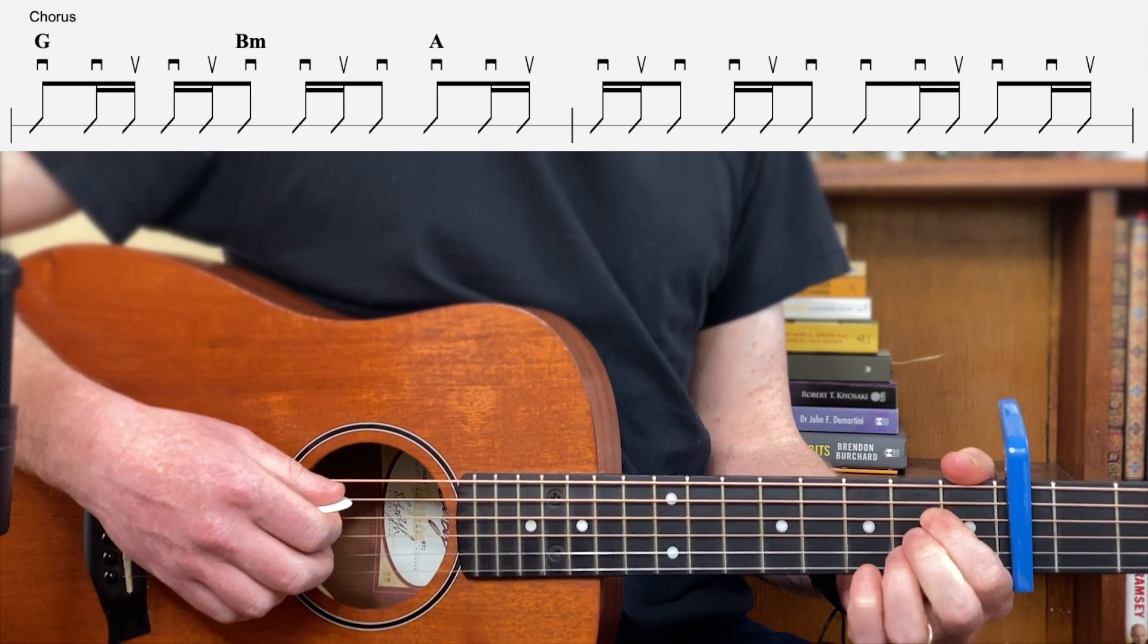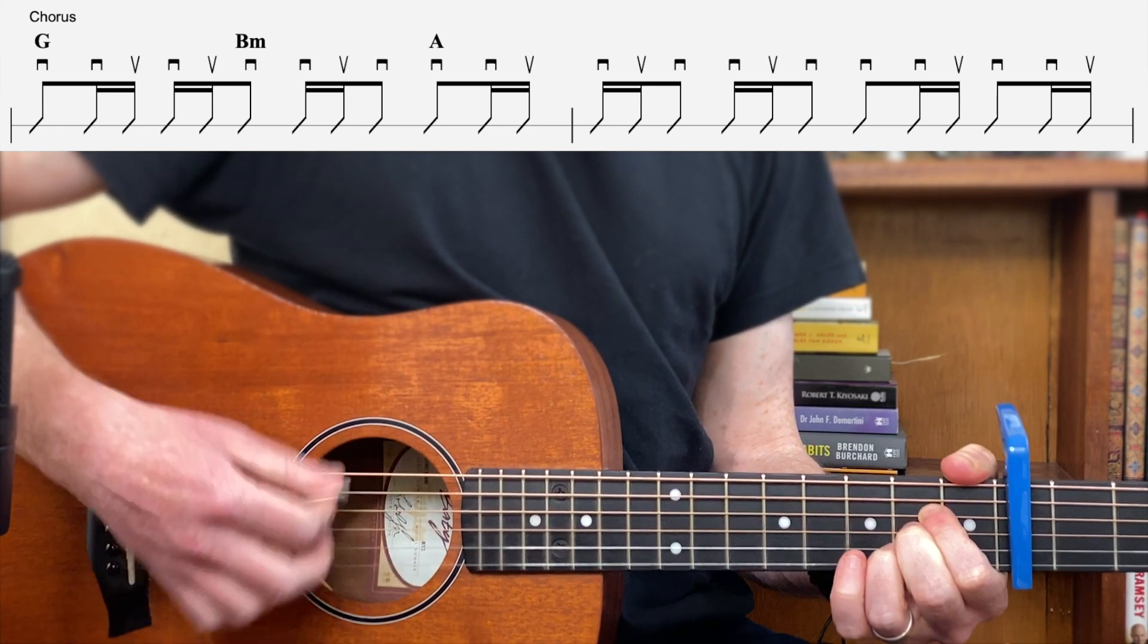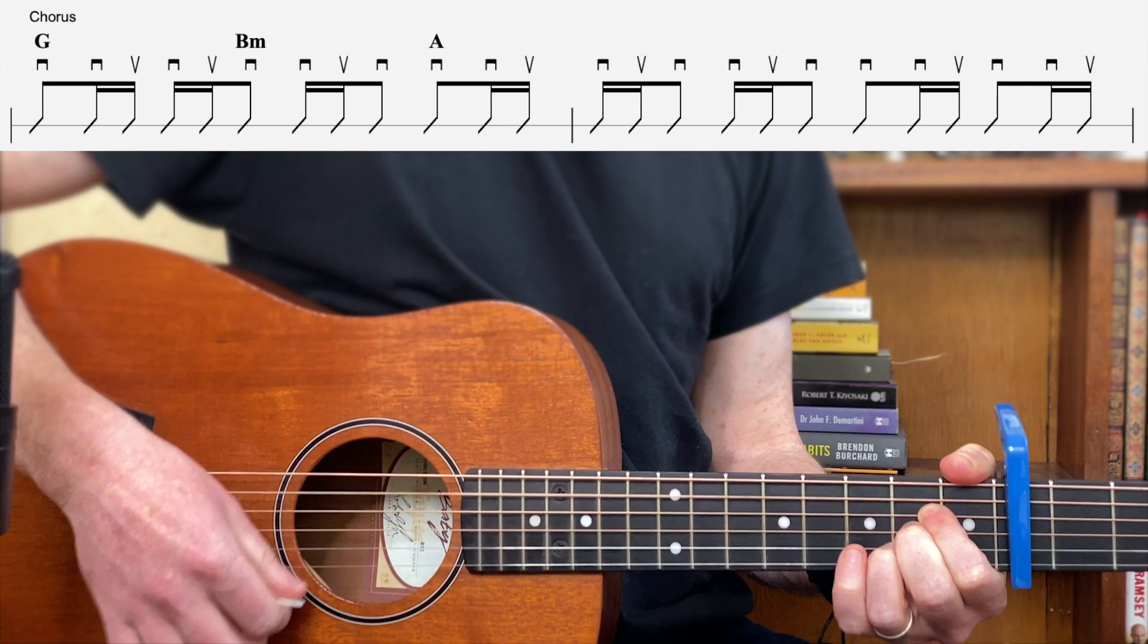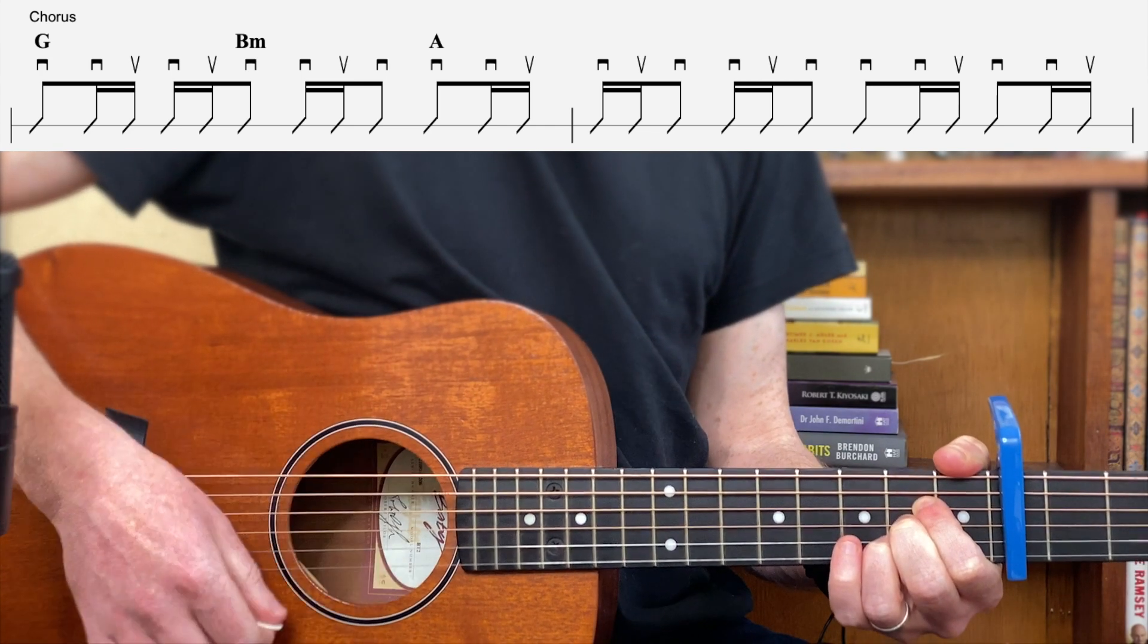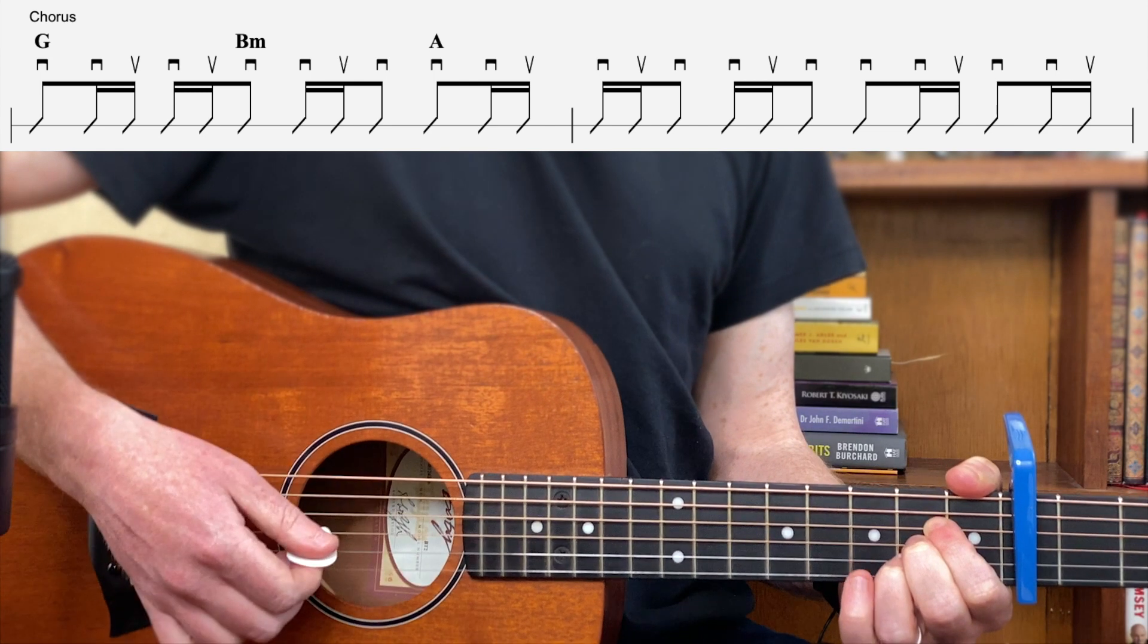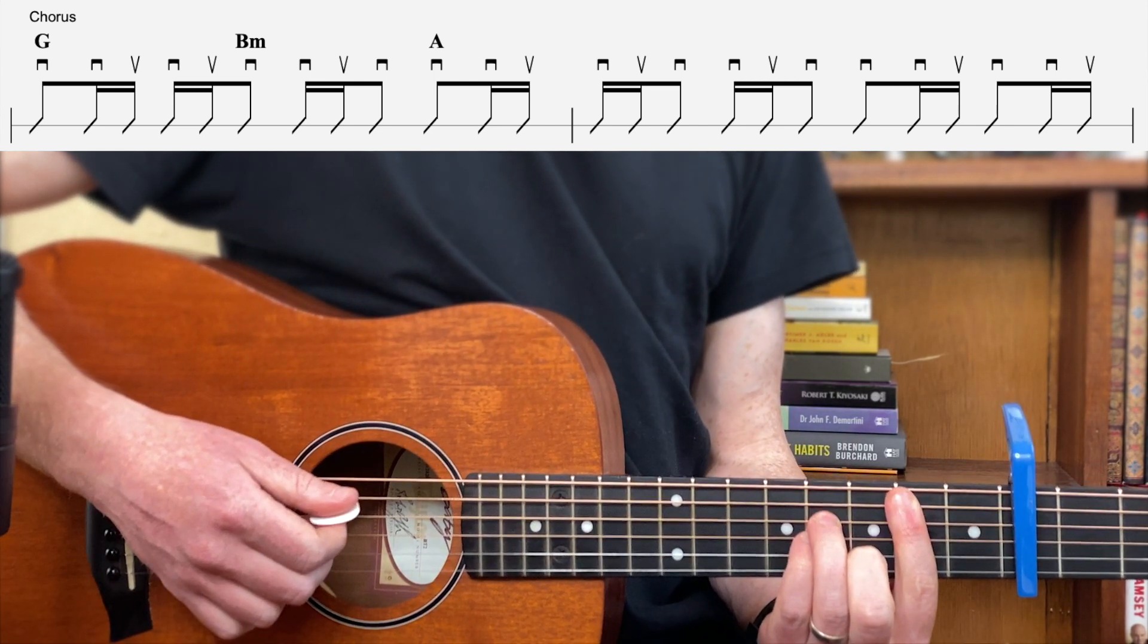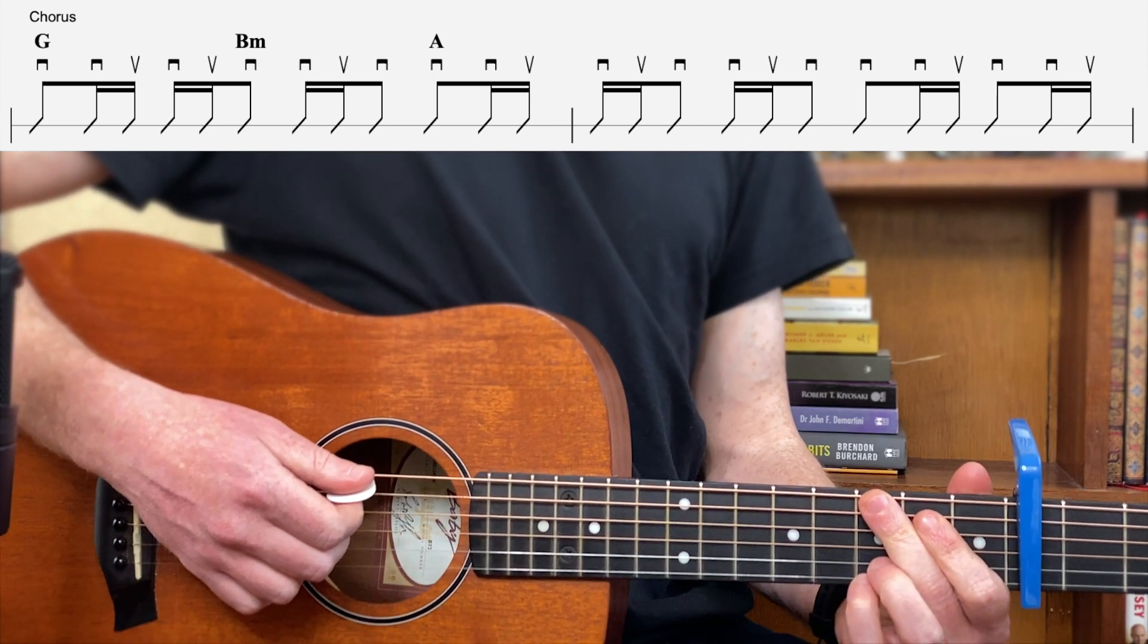Like if I was practicing this beginning, I would begin with the A. And I'd get used to doing it on that, then I'd join it to the G to B minor. Alright, so that is the rhythm for the chorus.